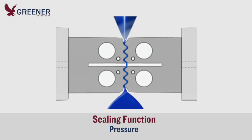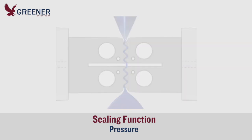Pressure is the force that the sealing jaws apply to the film. This force moves the melted sealant layer into any open channels created by overlapping layers of film and cocks off potential leaks. Even and consistent pressure is critical for producing quality seals.